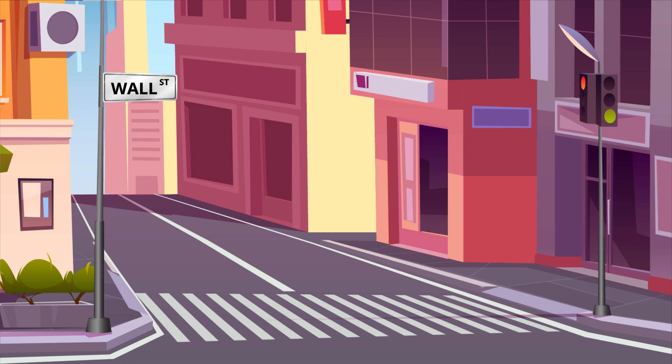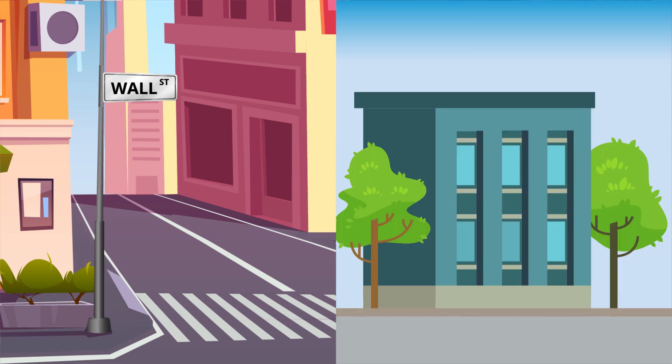Since metonymies are based on cultural concepts, you may not even notice you're using or hearing one. For example, Wall Street is a street in New York City that has been the home of many brokerages and investment banks. Because of this, many Americans refer to the entire U.S. financial industry as Wall Street. Thus, Kezia's new job on Wall Street may not actually be located on Wall Street at all. This use of figurative language would probably confuse someone who isn't familiar with American finance.